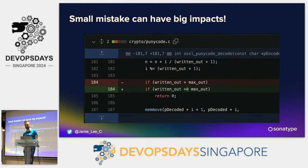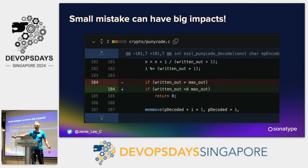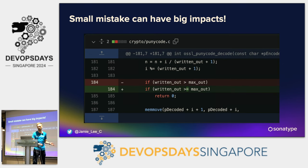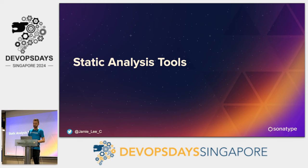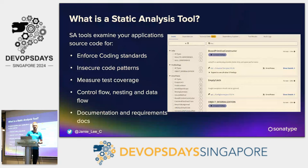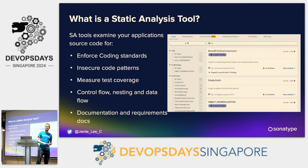Little things can have big impacts. The difference between two lines of code in our example is a CVE — a vulnerability. It's very simple to accidentally make that mistake. All it is, is an equal sign — and that difference is the difference between a vulnerability and not a vulnerability. Static analysis tools are a really good way to check your code. They examine your application source code to enforce standards, help identify insecure coding patterns, measure test coverage, and do control flow analysis to see what methods are being called to determine if you're vulnerable.